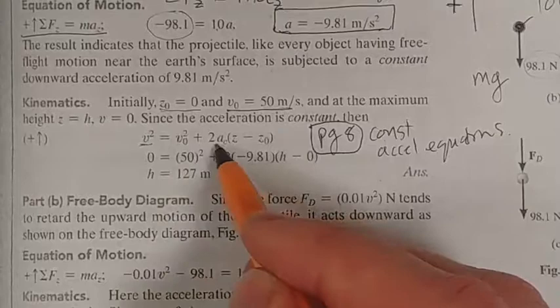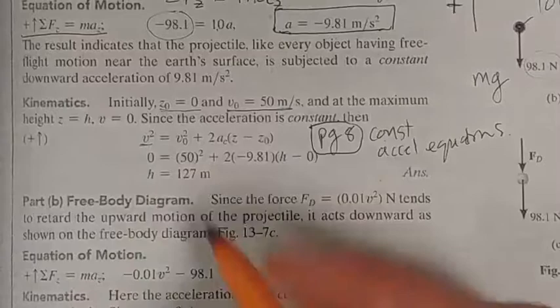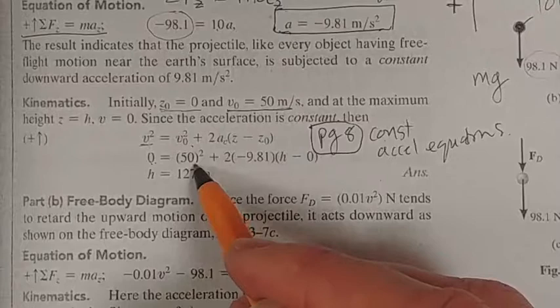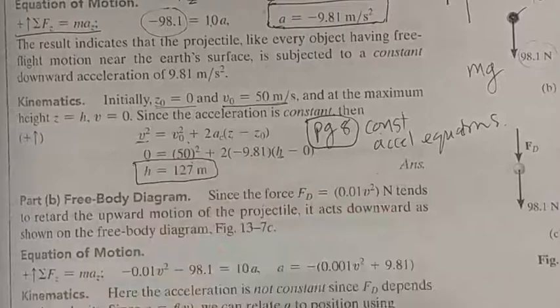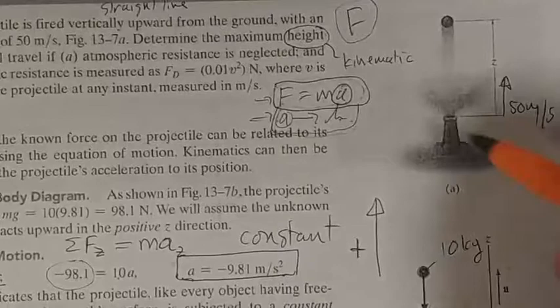So we can use this equation. V squared is V zero squared plus 2A Z minus Z zero. That will relate those variables. What is our final velocity? Zero. At the maximum height, our final velocity is zero. What's our initial? It was 50. What is our acceleration? It's minus 9.81. What's our final height? That's our H. Our initial height is zero. And we can solve for this. So there we go.